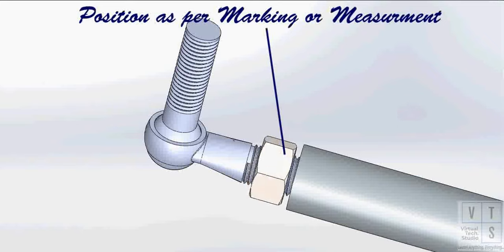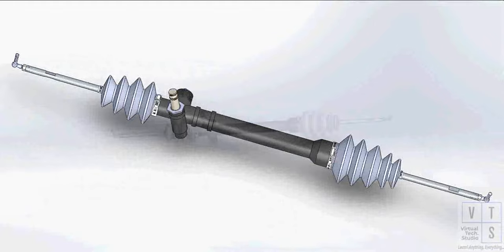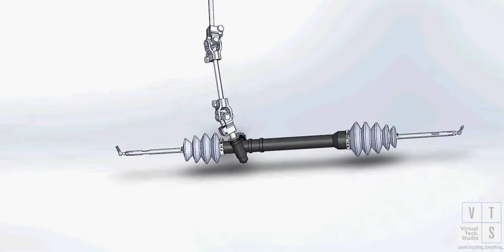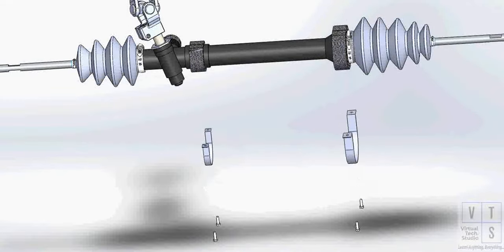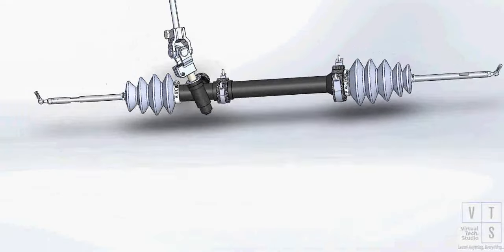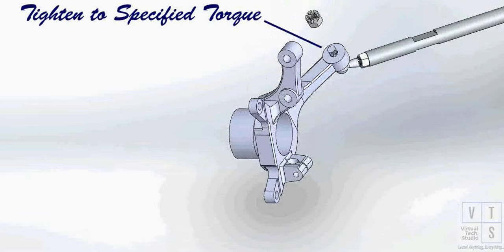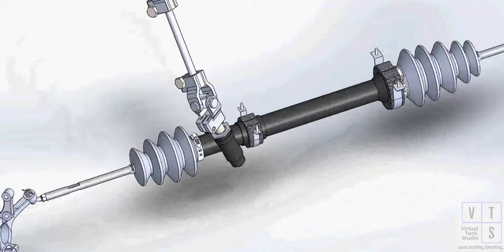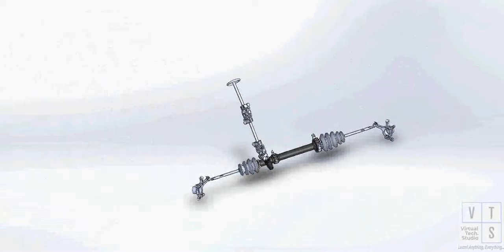Position the tie rod and lock nut as per marking or measurement made during removal. Tighten the castle nut to specified torque. Be sure that steering wheel and brake discs are all in straight ahead driving state. Then, tighten steering lower shaft bolts to specified torque.